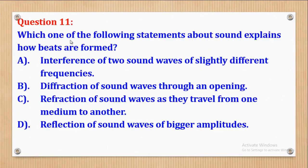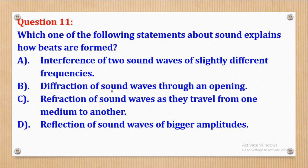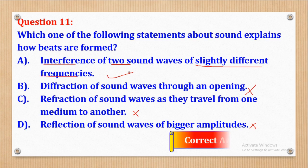Question 11 says: which one of the following statements about sound explains how beats are formed? Part A: interference of two sound waves of slightly different frequencies. Part B: deflection of sound waves through an opening. Part C: reflection of sound waves as they travel from one medium to another. Part D: reflection of sound waves of bigger amplitudes. The key words 'slightly different frequencies' and 'interference' make part A the correct answer.